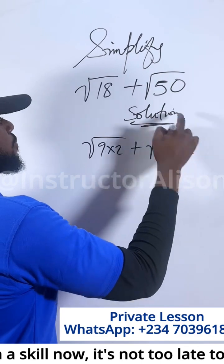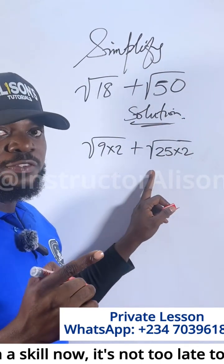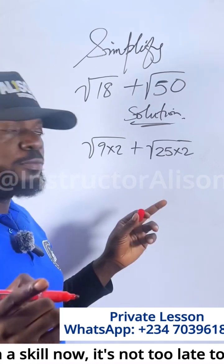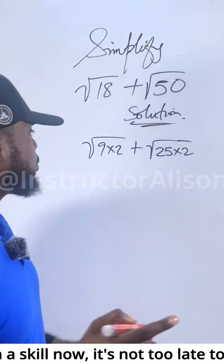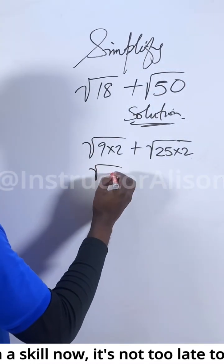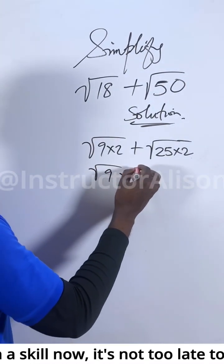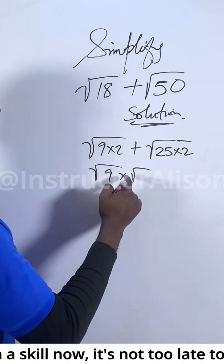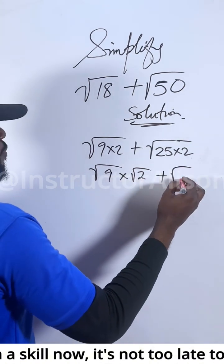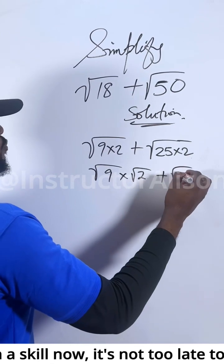Here we have 25 times 2 to give you 50. We understand that 10 times 5 also gives you 50, but neither of them is a perfect square. So what do we need to do? We split this.